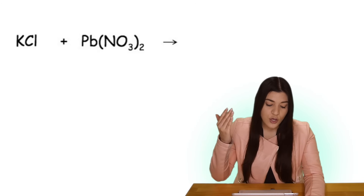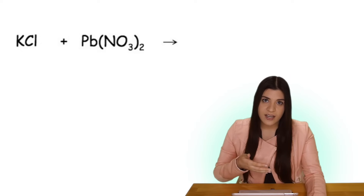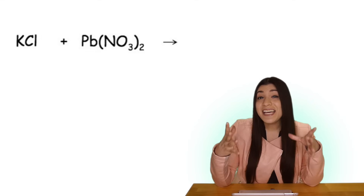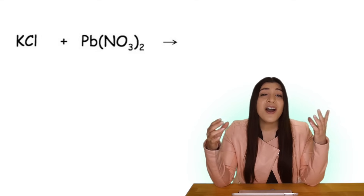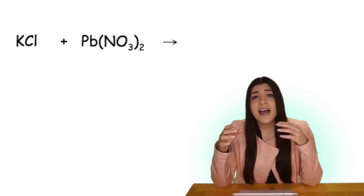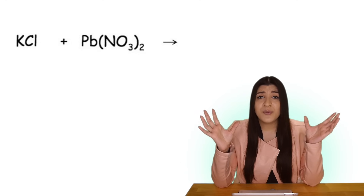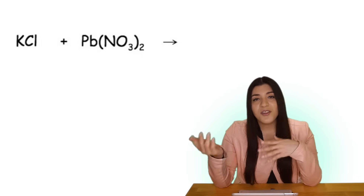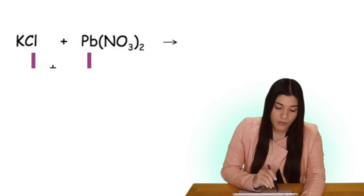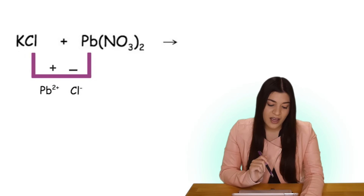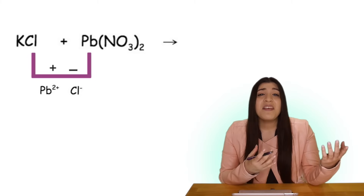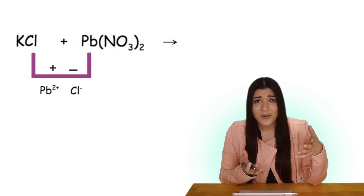Let's predict our products. We're given our reactants and the concept of the inner with the inner and outer with the outer. The inner elements will combine to form one product and the outer elements will combine to form the other product. With the inner with the inner we'll start off with lead and chlorine. You always want to put the positive charge, which is the metal, and then the negative charge, which is the non-metal, together.